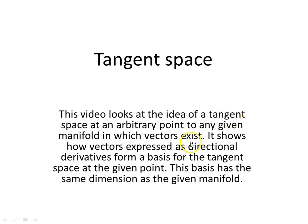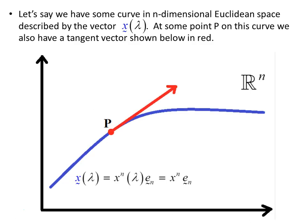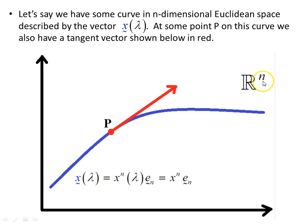The tangent space is the space in which vectors exist. Let's say we have some curve in blue in n-dimensional Euclidean space, described by the vector x parameterized in terms of variable lambda — x of lambda, x₁ through xₙ, n being the dimension of the space. At some point p on this curve, we also have a tangent vector shown in red.